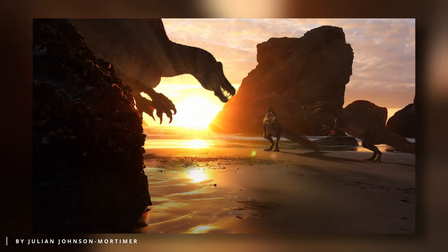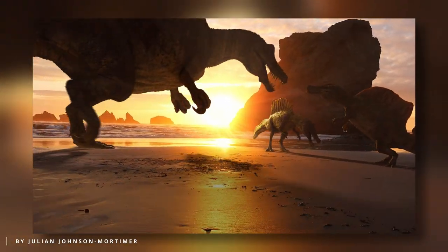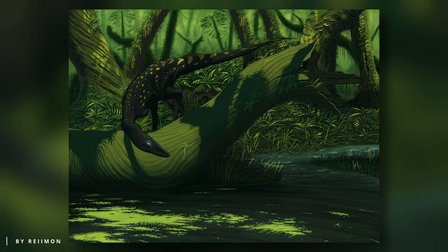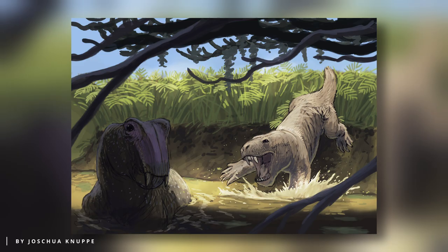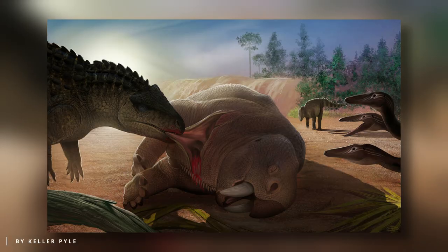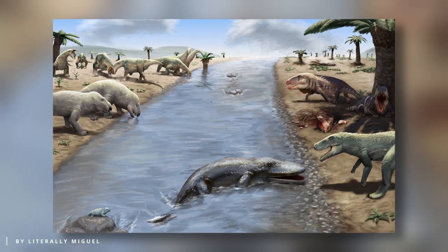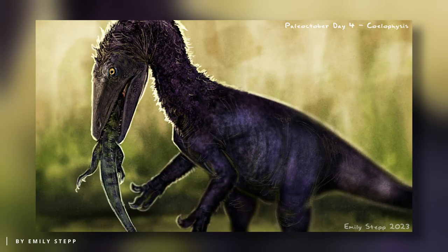Although, when dinosaurs first appeared, they were not the dominant creatures we often associate them with. Instead, they existed in more primitive forms, significantly smaller in size compared to their later descendants. Many habitats during this time were still occupied by therapsids, a group that eventually gave rise to modern mammals, and other archosaurs, particularly members of the crocodilian lineage Pseudosuchia. However, most of these other creatures became extinct before the end of the Triassic period, presenting dinosaurs with an opportunity to fill the ecological niches left by the extinct species.